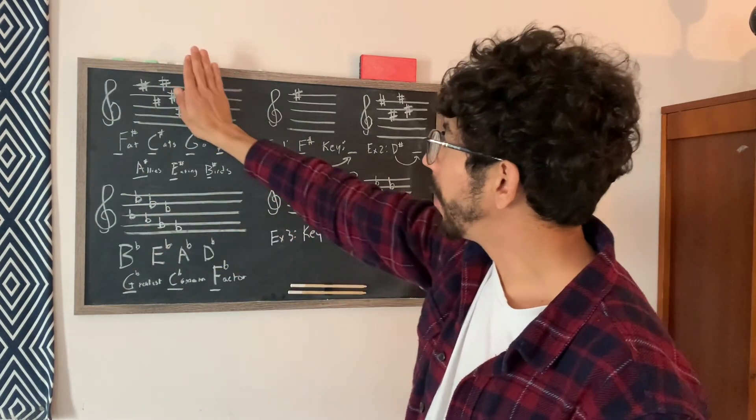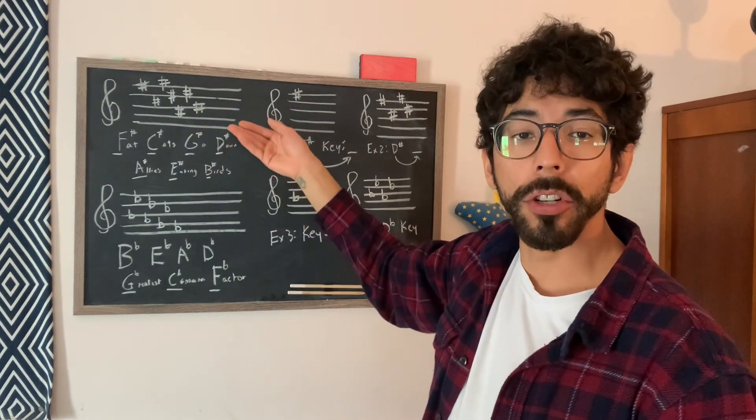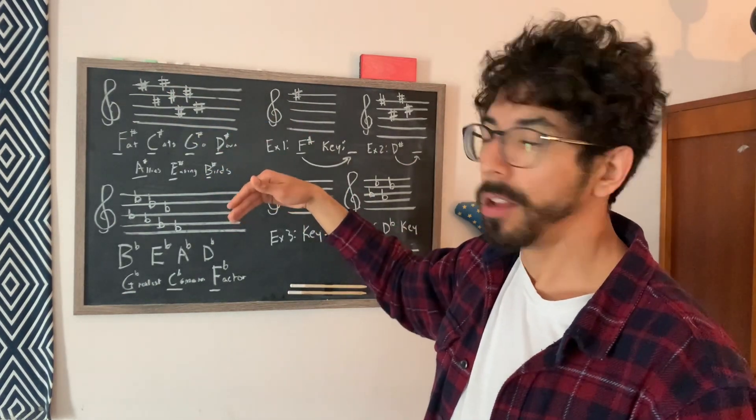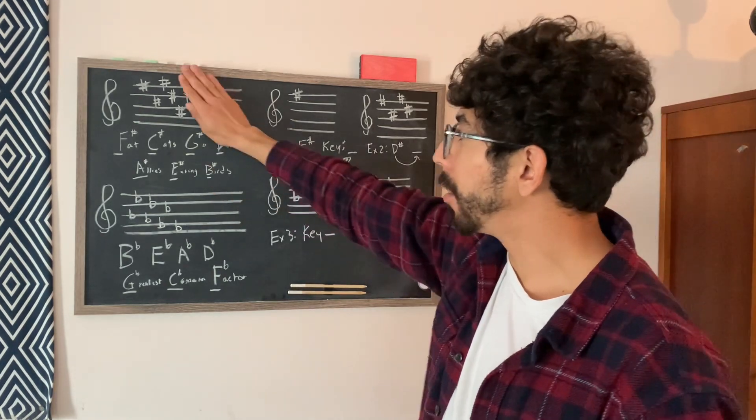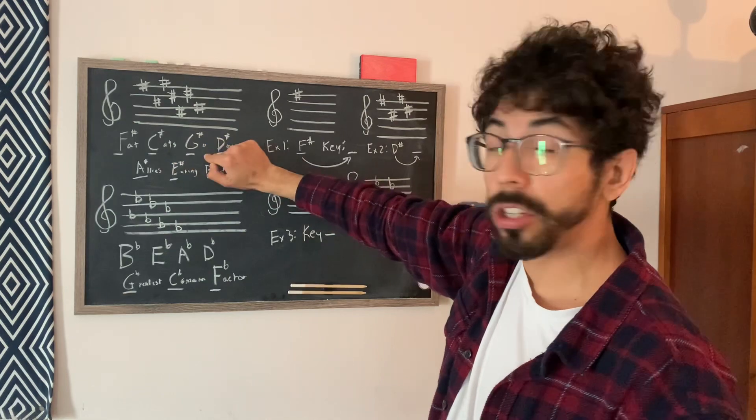So same goes, if I add another sharp, that's G-sharp. The next letter after G is going to be A. So now we're in the key of A major if there's three sharps, because that's F-sharp, C-sharp, G-sharp.